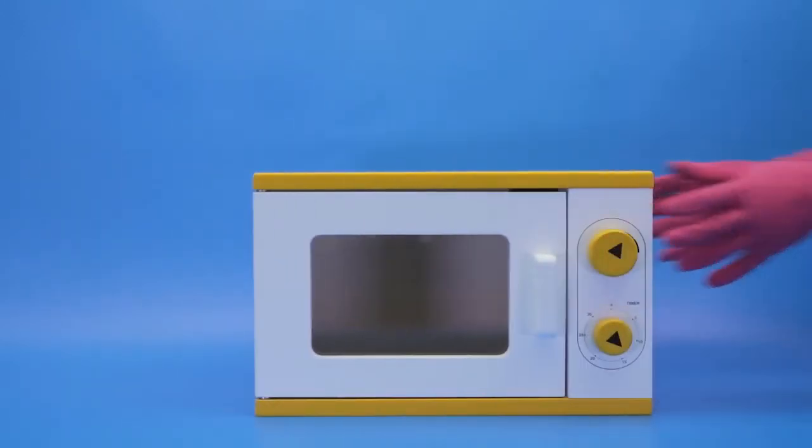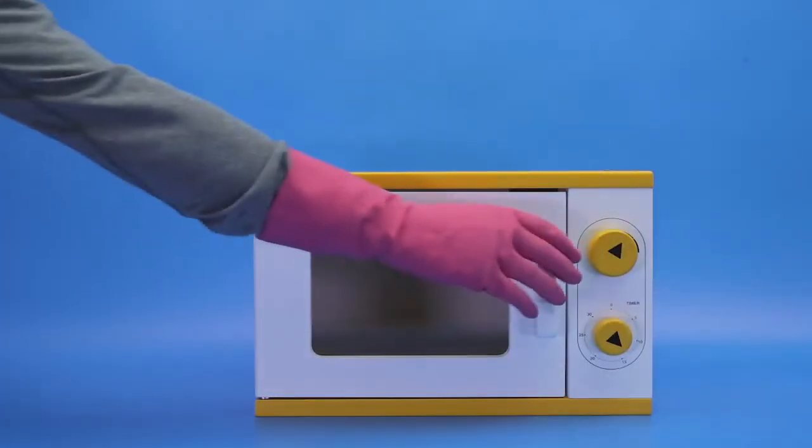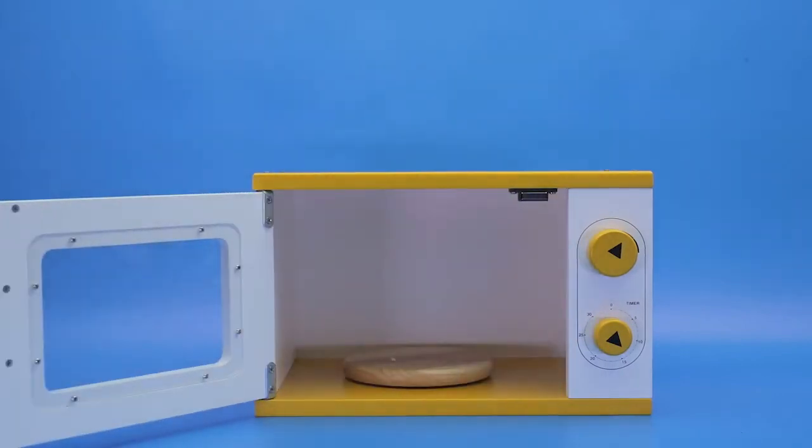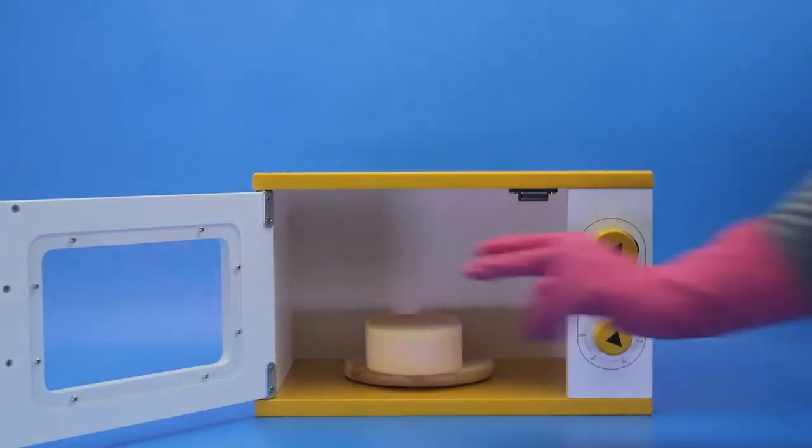If you don't have a dishwasher, you can place a wet sponge in the microwave and zap it on a high setting for two minutes. Never do this with a dry sponge.